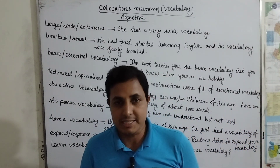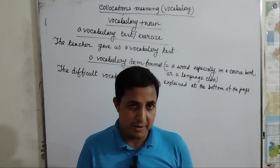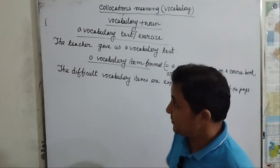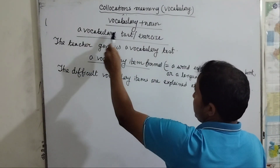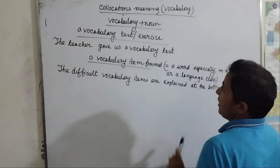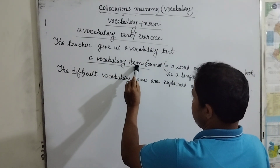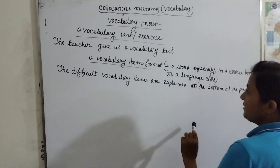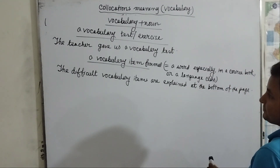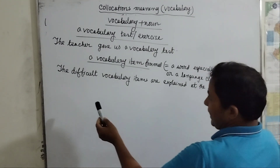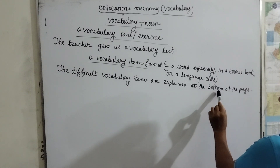Now I am going to explain vocabulary plus noun. That means first vocabulary, then noun. A vocabulary test or a vocabulary exercise — for example: the teacher gave us a vocabulary test. A vocabulary item — that is a formal way to refer to a word, especially in a course book or a language class. Example: the difficult vocabulary items are explained at the bottom of the page.